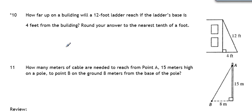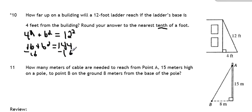Number 10. How far up on a building will a 12-foot ladder reach if the ladder's base is 4 feet from the building? Round your answer to the nearest tenth. So 4 feet, we'll call that A squared plus B squared because we don't know the height of the building. We do know the hypotenuse, which is 12 feet. So we have 16 plus B squared equals 144. Subtract 16 from both sides, and we get B squared equals 128. Take the square root of both, and we get B equals 11.3.